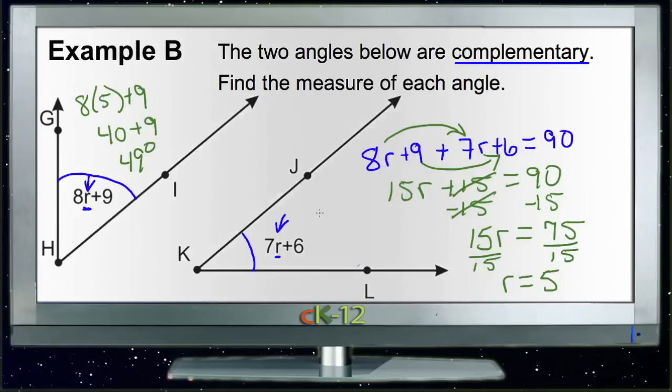The second angle measure then would be 7 times 5 plus 6, or 35 plus 6, or 41 degrees.